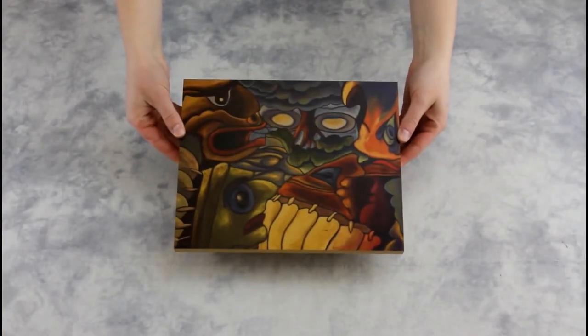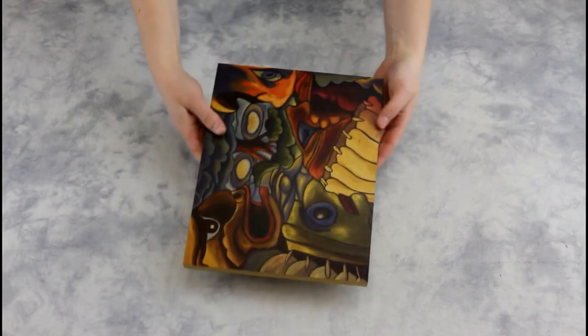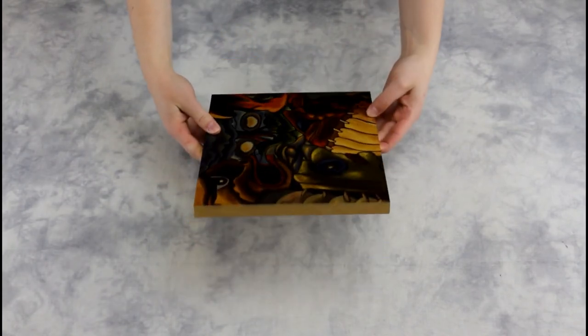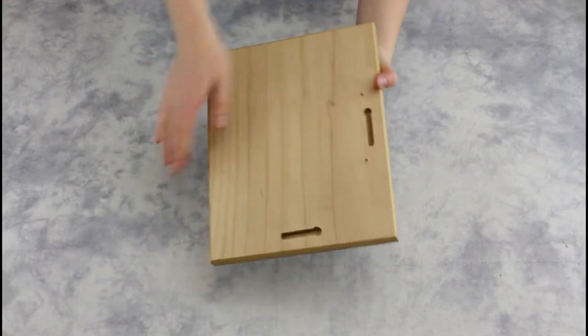Here we have the final product of dye sublimation on wood. As you can see, the image has a warm, earthy tone giving it a vintage appearance.